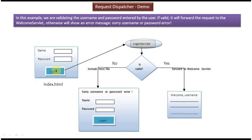Here you can see the index.html. It has name and password. The user has to enter username and password and click on login. Once the login button is clicked, the request will be sent to the login servlet. The login servlet will check whether username and password is valid or not. If it is valid, it will forward the request to the welcome servlet, which will display the welcome message. If username and password is not valid, it will display 'sorry, username or password error' and it will include the index.html.